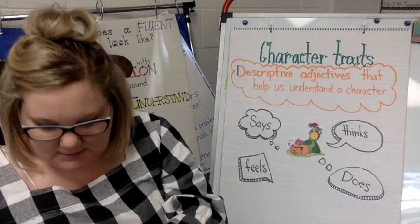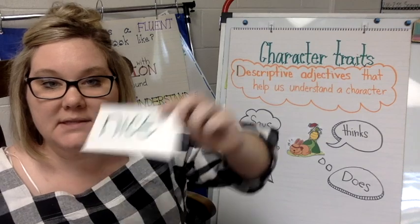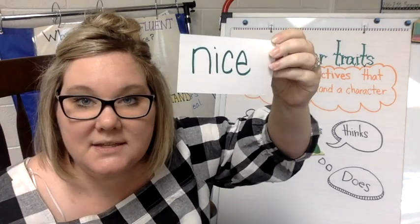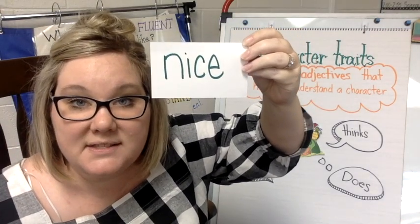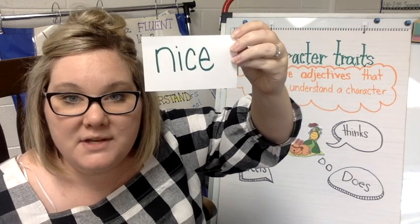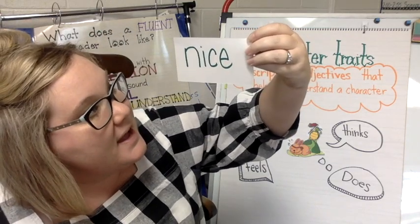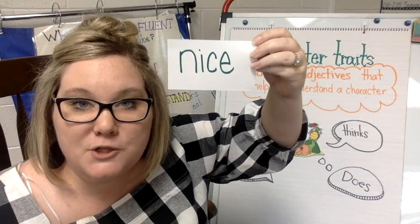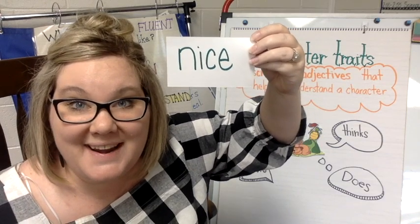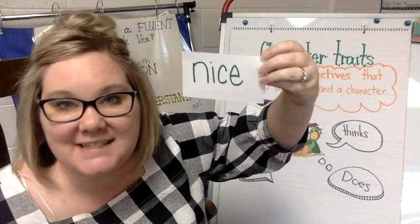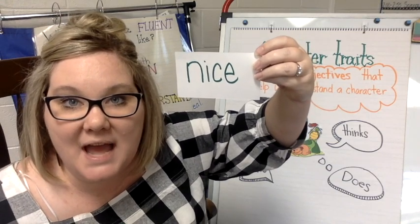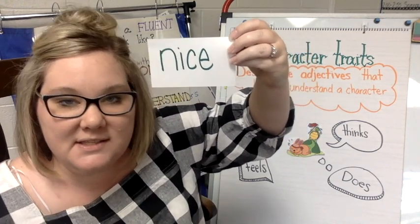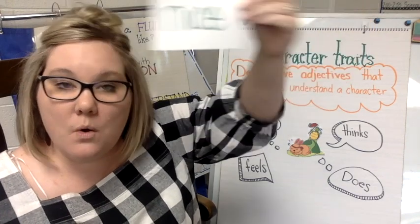How about nice. One of these characters was nice. And as you're writing this down, friends, you might notice that we have a sneaky E that slipped onto our word. Our sneaky E tells our I to say its name — nice. So think about that as you're writing it down. Does this describe the tortoise or the hare?